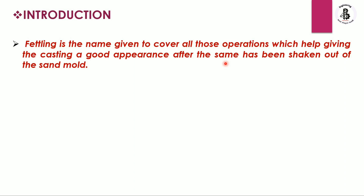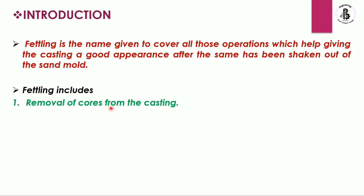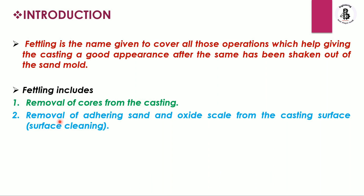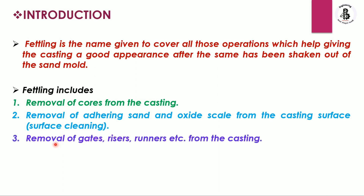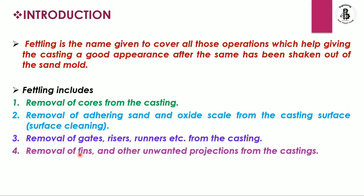This process is performed after solidification of the metal into a mold cavity, and after breaking the sand mold a number of processes are used for making good castings. Fettling includes: removal of cores from the castings, removal of adhering sands and oxide scale from the casting surfaces (surface cleaning operations), removal of gates, risers, and runners, and removal of fins and other unwanted projections from the castings.